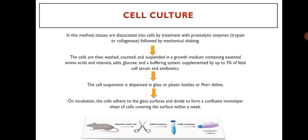In this method, tissues are dissociated into cells by treatment with proteolytic enzymes like trypsin or collagenase, followed by mechanical shaking. The cells are then washed, counted, and suspended in growth medium containing essential amino acids, vitamins, salts, glucose, and a buffering system, supplemented by up to 5 percent fetal calf serum and antibiotics. The cell suspension is dispensed in glass or plastic bottles or Petri dishes. On incubation, the cells adhere to the glass surface and divide to form a confluent monolayer sheet of cells covering the surface within a week.